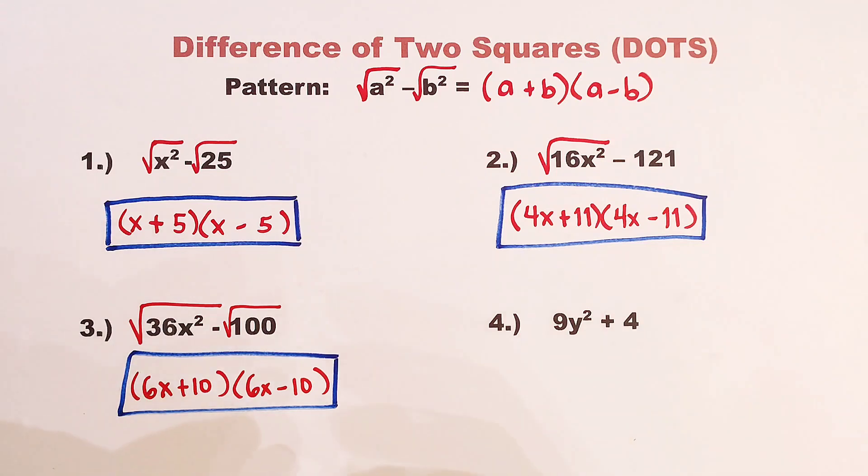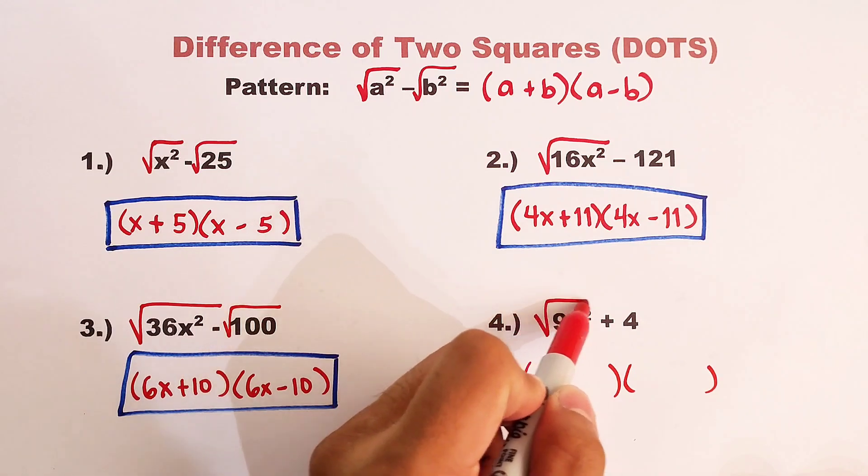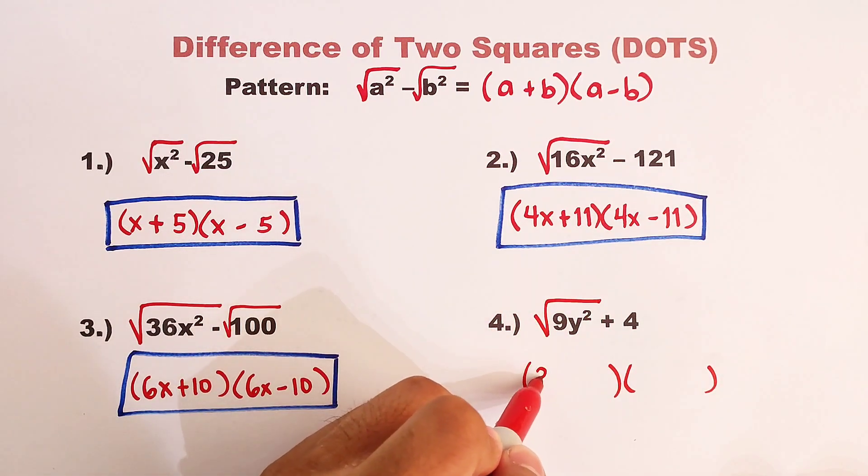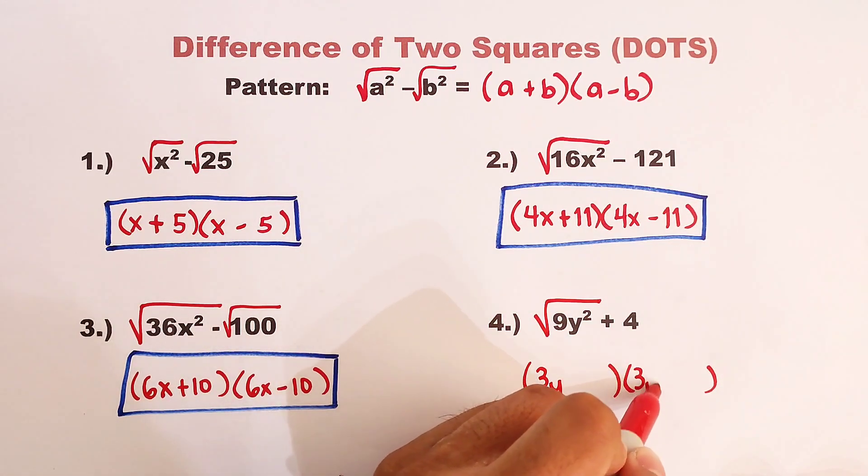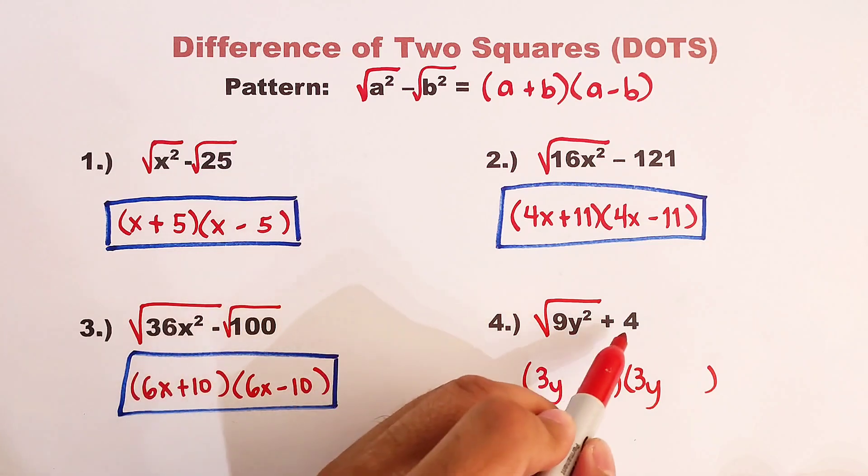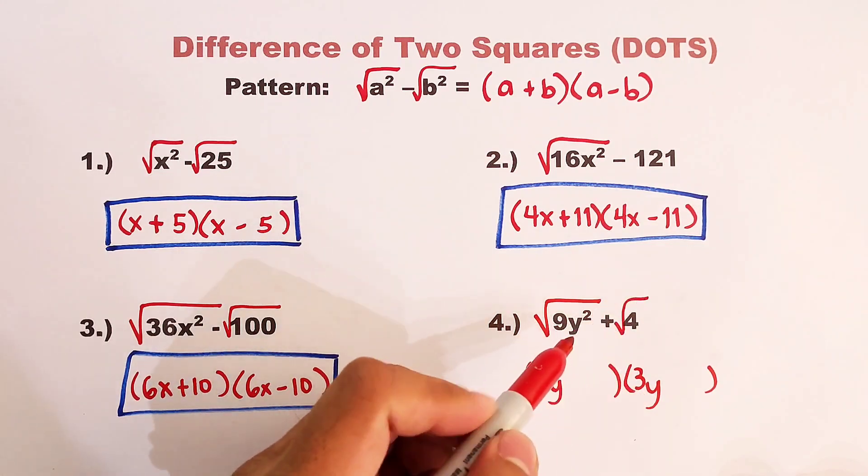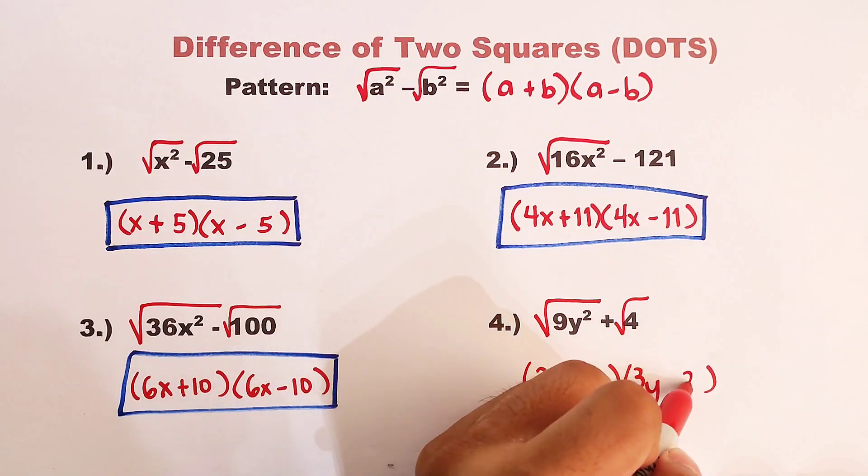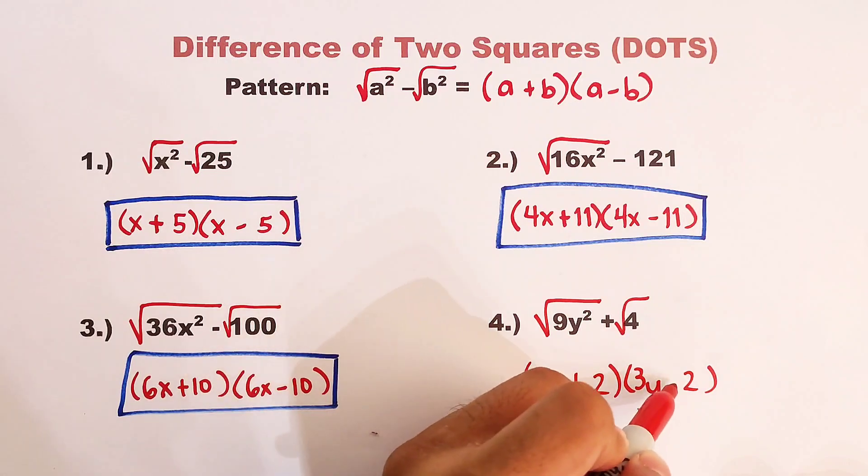As for number 4, let's have the factors. The square root of 9y squared is definitely 3y. And this is also 3y. And as for the second term, the square root of 4 is 2. And we can have the plus and minus.